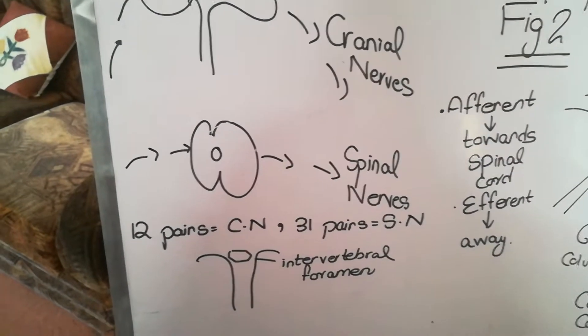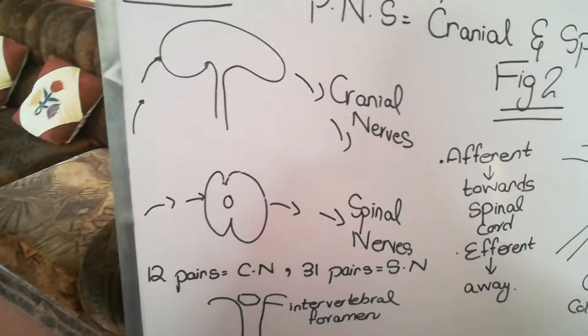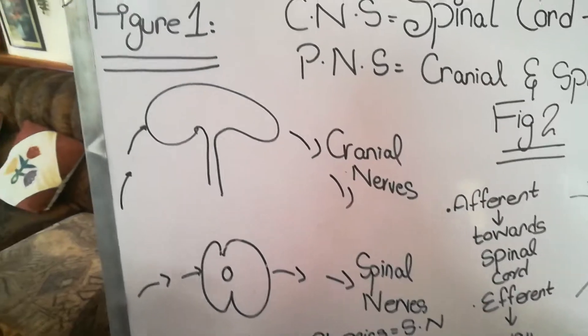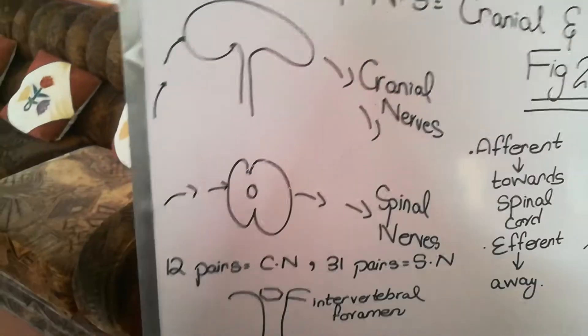According to the region of the vertebral column, the spinal nerves are distributed as: 8 cervical, 12 thoracic, 5 lumbar, 5 sacral, and 1 coccygeal.